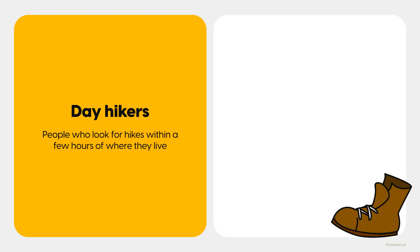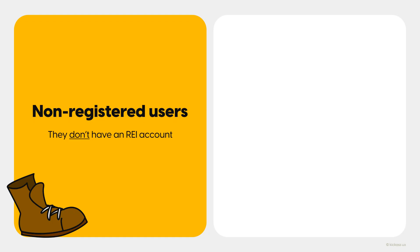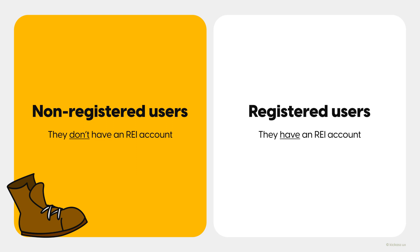Let's talk about the two main users who use this type of service. First, are day hikers who look for hikes within a few hours of where they live. Second, are backpackers who look for multi-day overnight trips in the outdoors. Keep in mind that hikers and backpackers — the users — can be subdivided into two user types. First, are non-registered users, people who have not registered to the REI site yet, meaning they cannot add ratings, comments, or write trip reports. And second, are REI users, who have an REI account which allows them to add ratings, trip reports, and save hikes.